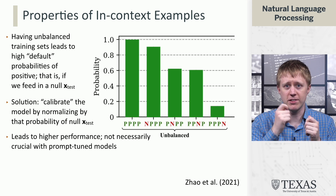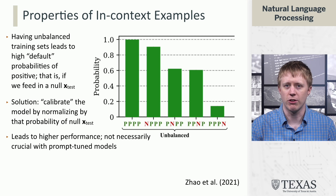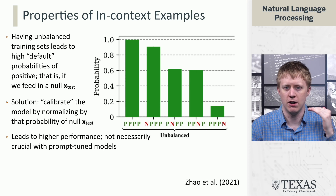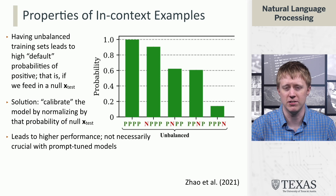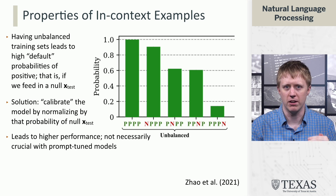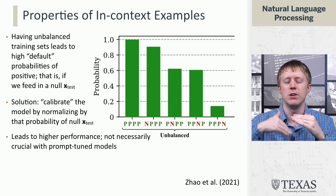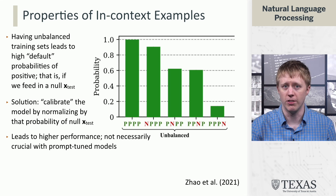Whereas if you go positive, positive, negative, positive, it's a little more balanced. What they look at is the probability of a label given just a null input — how much the model is biased toward one label or the other. Ultimately, they use that to calibrate the model's decisions: they look at that probability on a null input and compare, when you give a real input, whether it is higher or lower than that null probability.